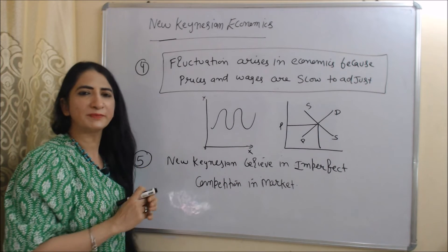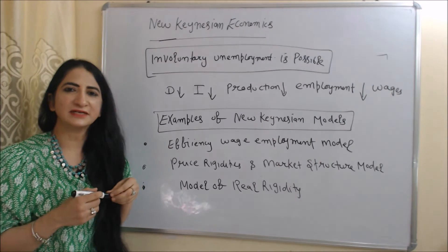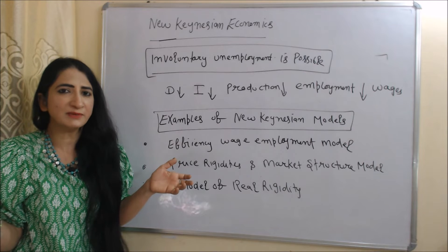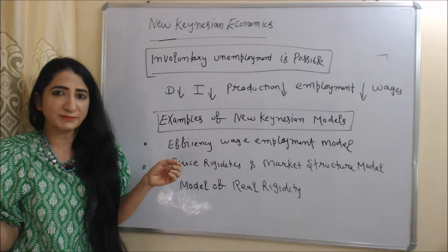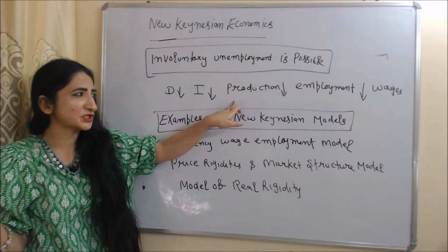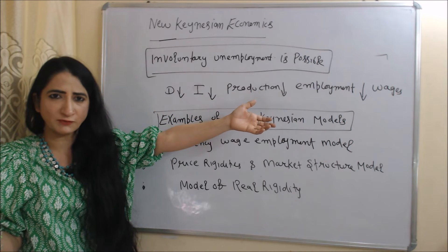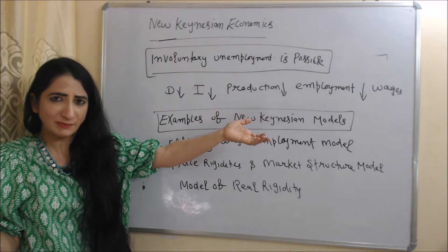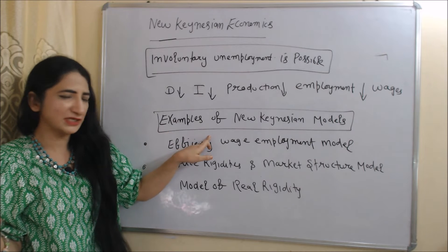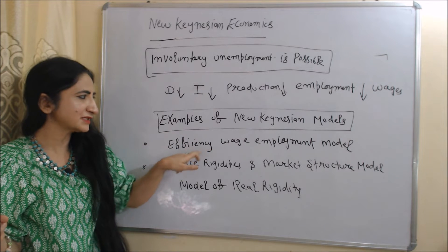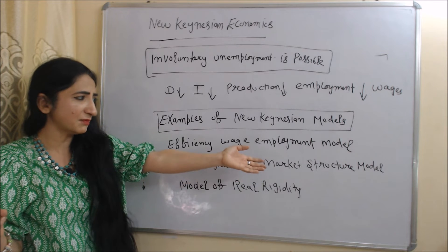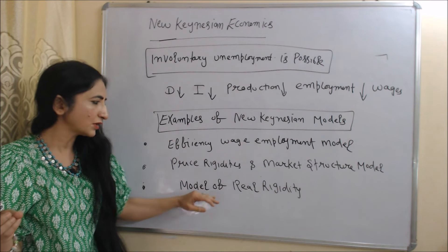Next, new Keynesians believe in imperfect competition in markets. Also, according to new Keynesians, involuntary unemployment is possible, because sometimes when demand for investment and production falls, employment and wages also fall, resulting in involuntary unemployment in the economy. Examples of new Keynesian models include the efficiency wage employment model, price rigidities and market structure model, and the model of real rigidity.